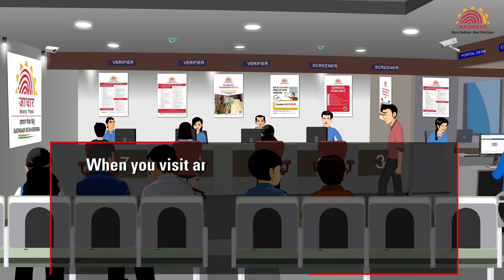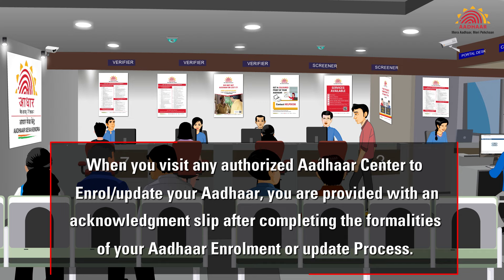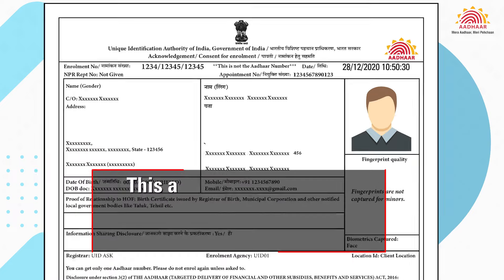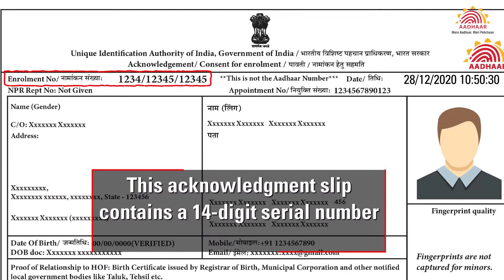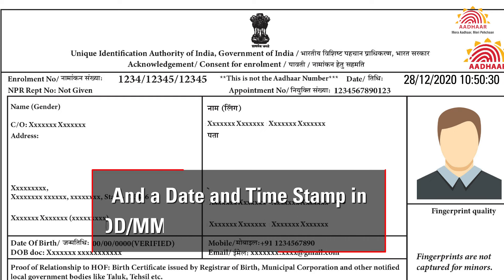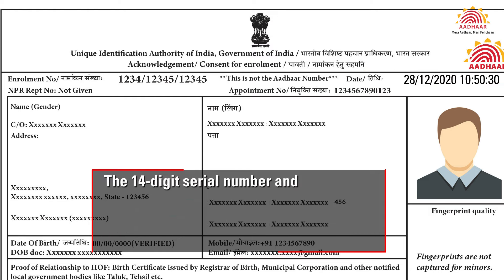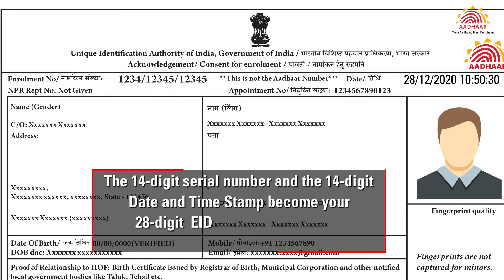When you visit any authorized Aadhaar center to enroll or update your Aadhaar, you are provided with an Acknowledgement Slip after completing the formalities. This Acknowledgement Slip contains a 14-digit serial number and a date and timestamp in dd-mm-yyyy-hhmm-ss format. The 14-digit serial number and the 14-digit date and timestamp become your 28-digit EID in case of enrollment, and URN in case of updation.